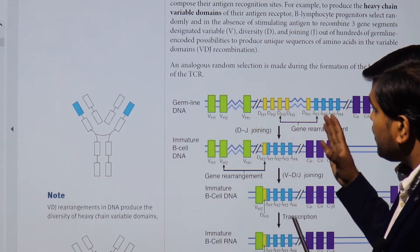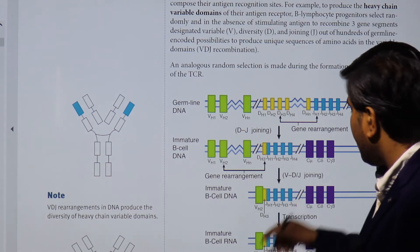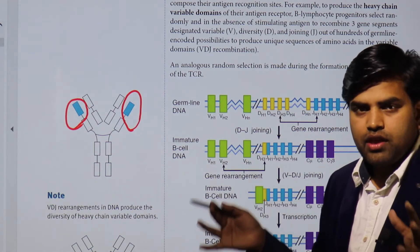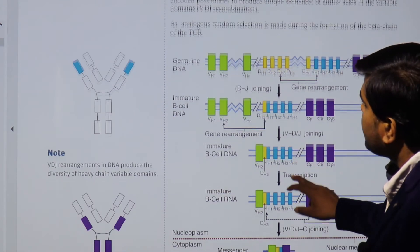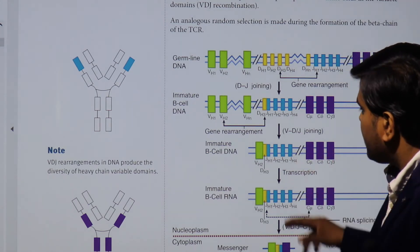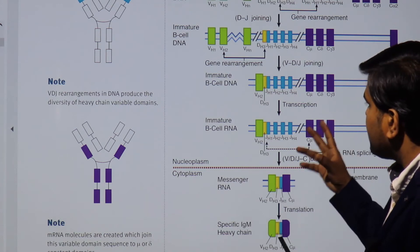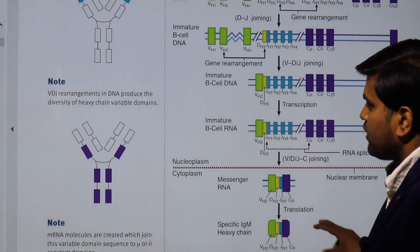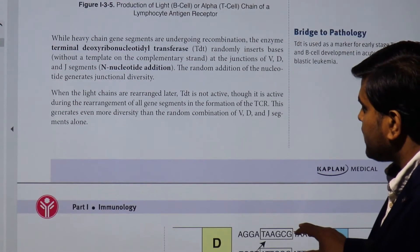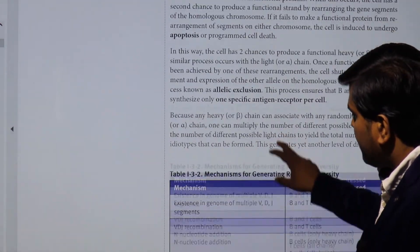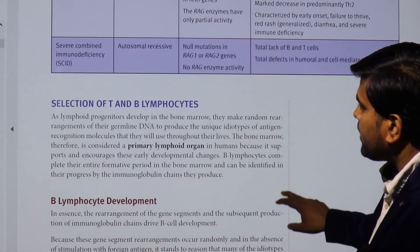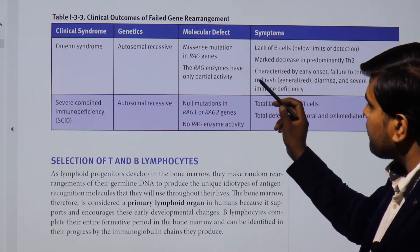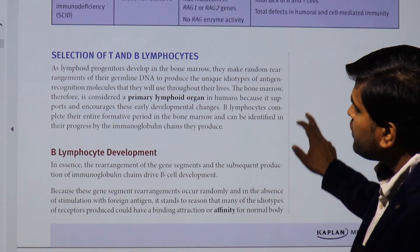VDJ recombination produces different idiotypes that can bind to a wide variety of antigens and epitopes. This process is carried out by RNA splicing in a random fashion. If there is a problem in VDJ recombination — specifically a defect in RAG genes — it results in a syndrome. We will discuss RAGs further, but first let's understand the selection of T and B lymphocytes.